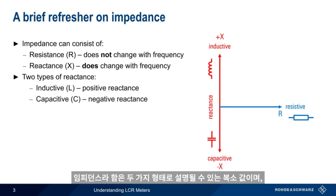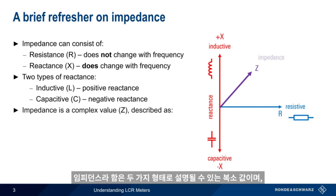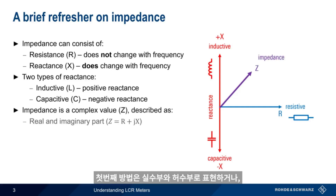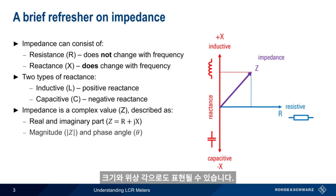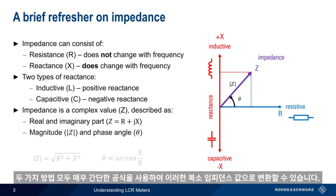Impedance, therefore, is a complex value, which can be described in two ways. One way is as a real part and an imaginary part. Another way is as a magnitude and a phase angle. Two very simple formulas can be used to convert between these two different representations of complex impedance.